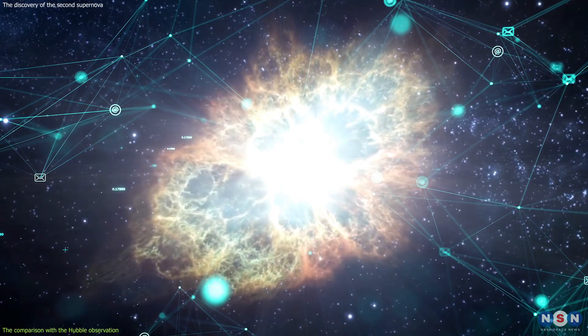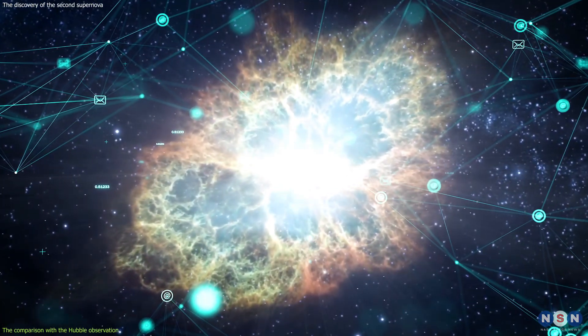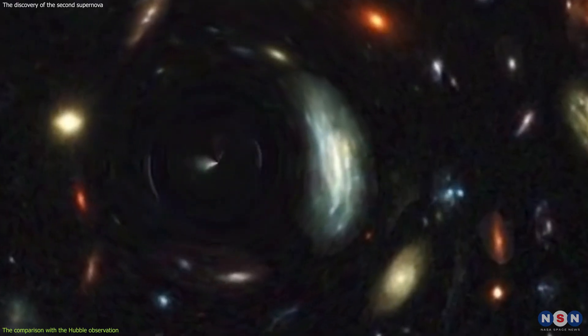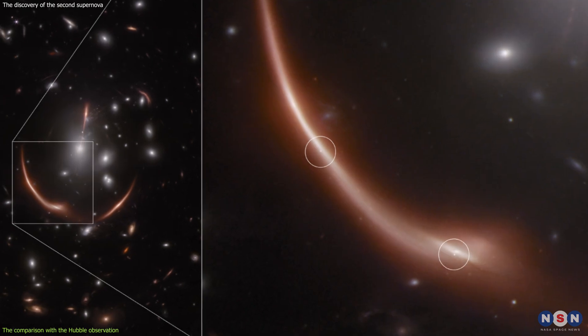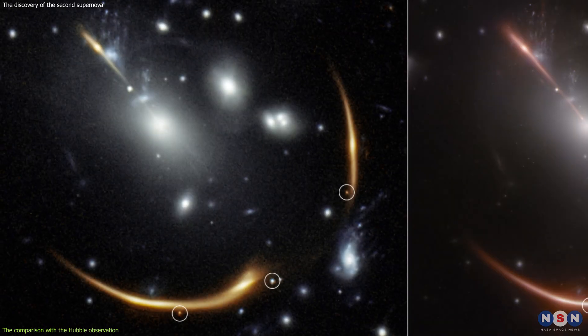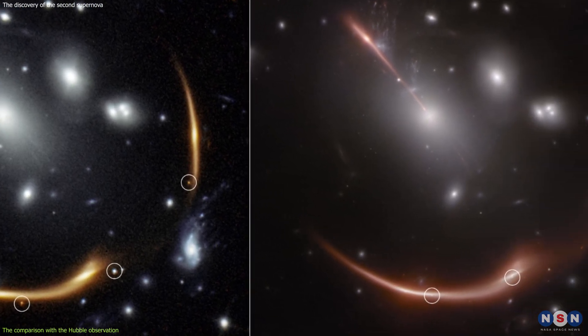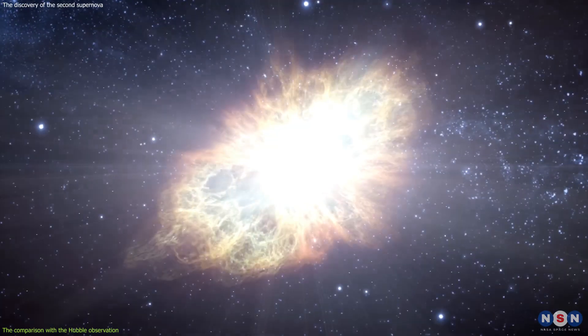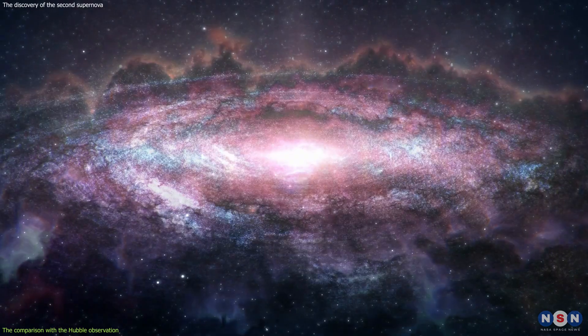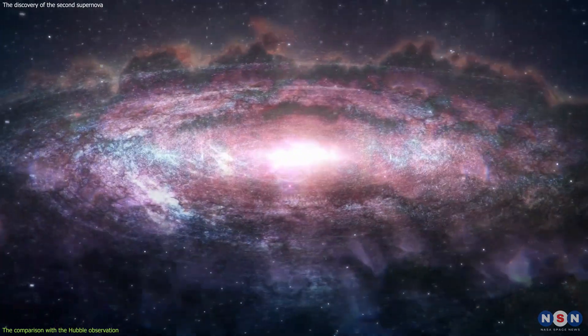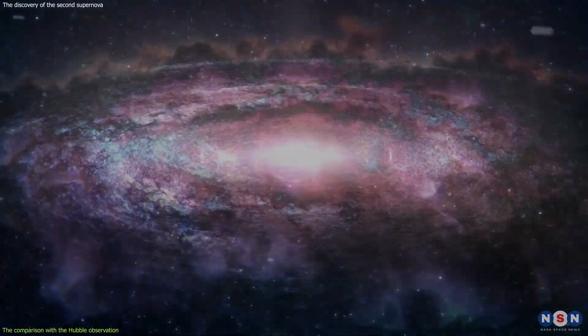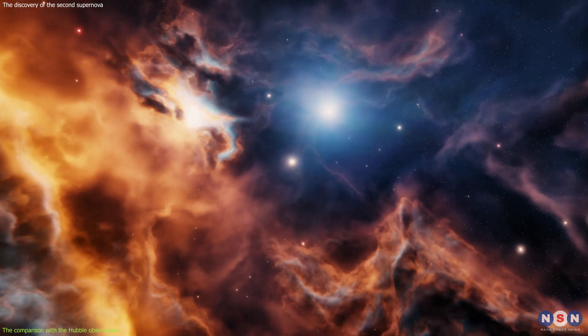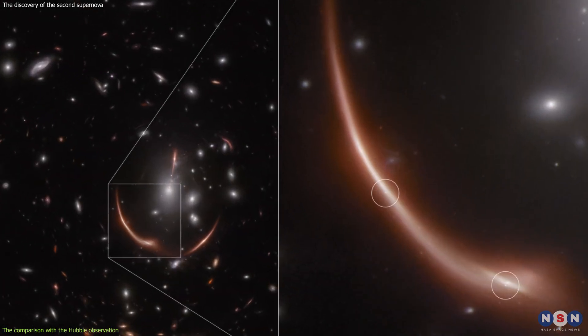However, analyzing the supernovae data is not easy, because there are many challenges and uncertainties involved. For example, the lensing effect can distort and stretch the shape and the size of the supernovae, making them harder to measure and compare. The time delay can also introduce errors and biases, because the supernovae can change over time, and the background galaxy can also vary in brightness and color.